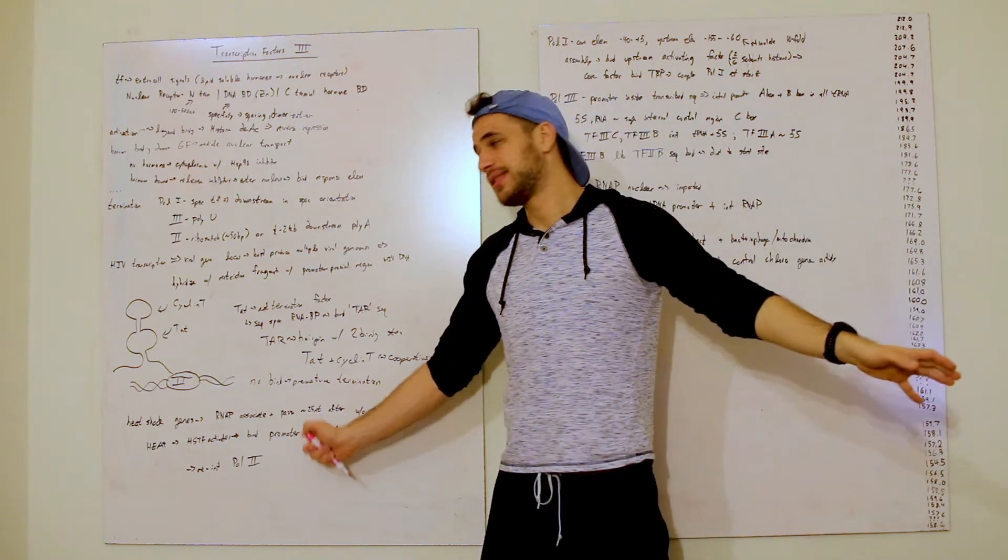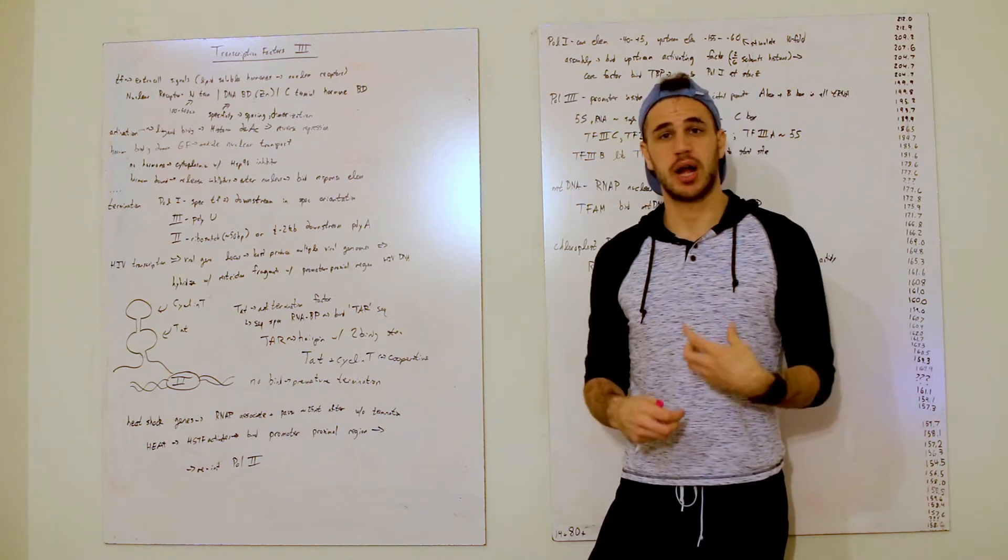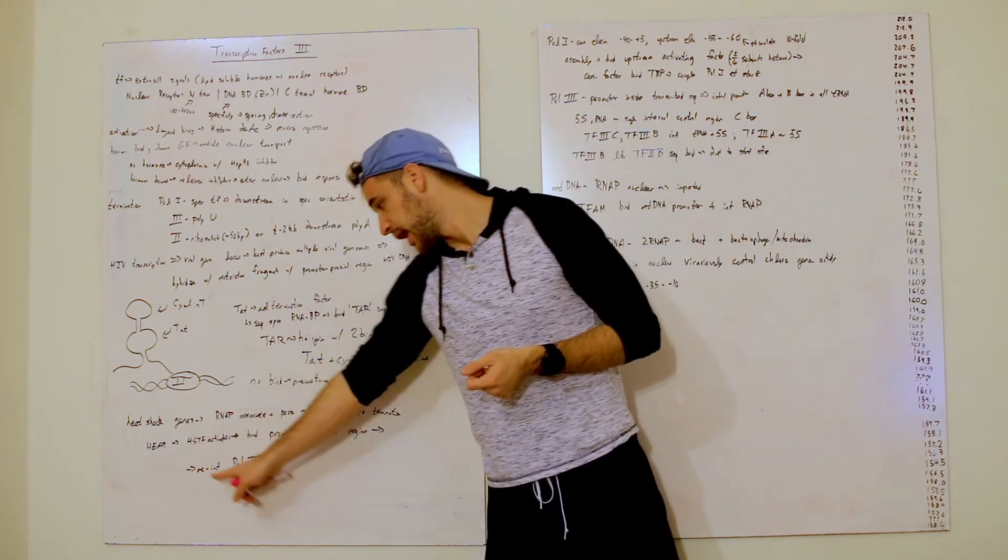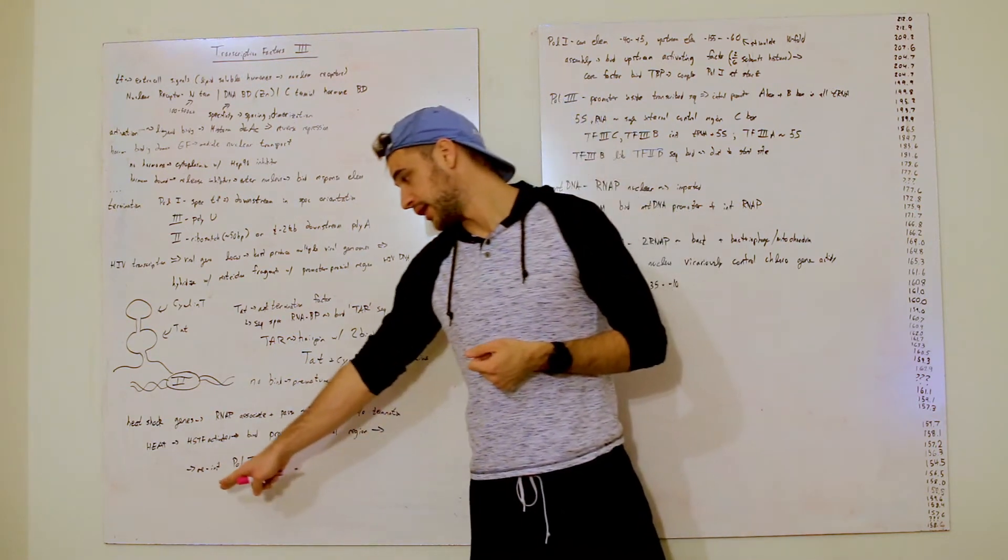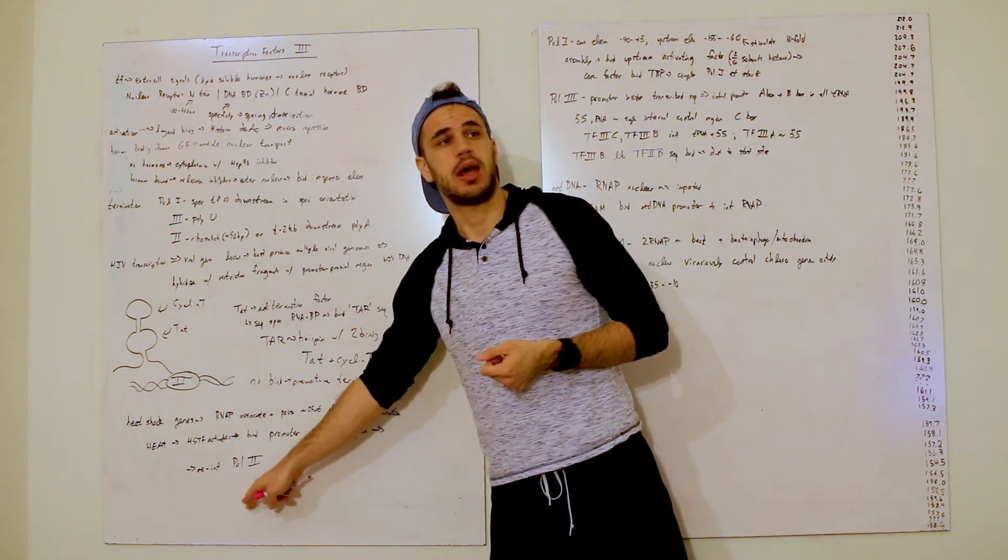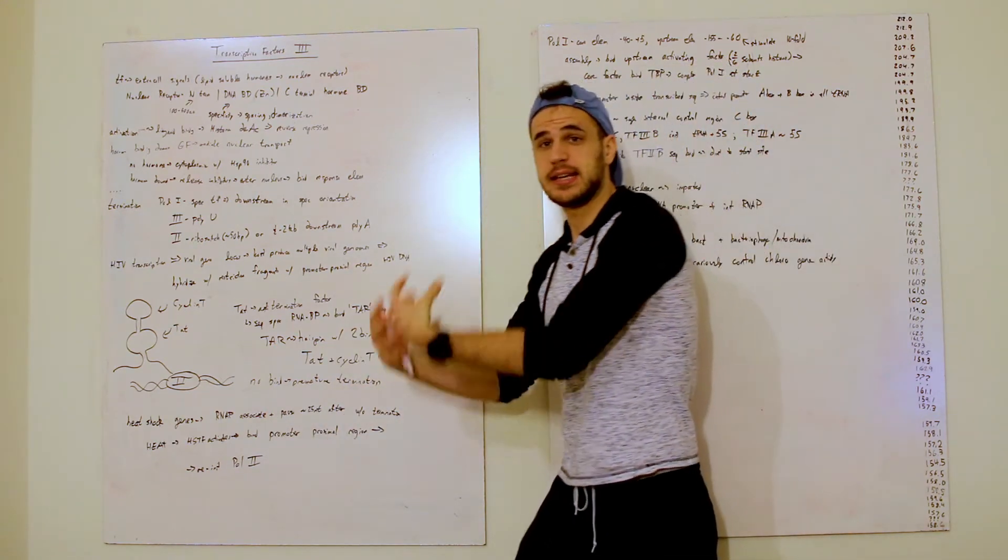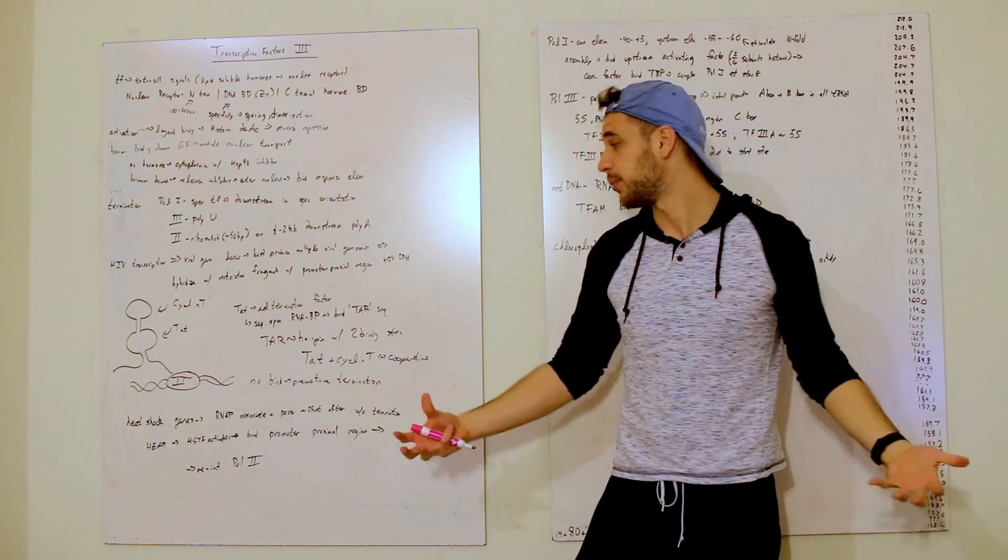So, and then, once there is heat, there is this heat shock, this stress produced on the environment, you have HSTF activate, and then it will bind promoter proximal region, and it will then reinitialize polymerase II, and it will create these genes that help associate, that help deal with when you're in heat shock, and you have to combat this horrible stress of environments.